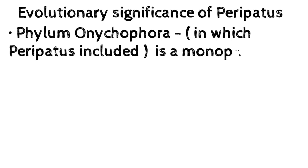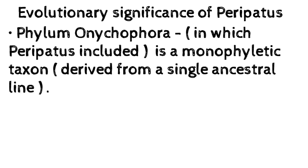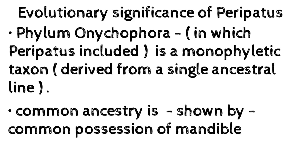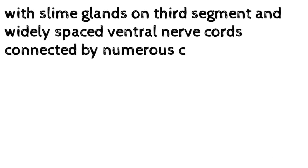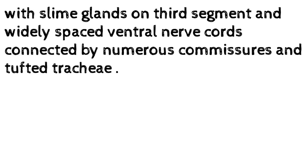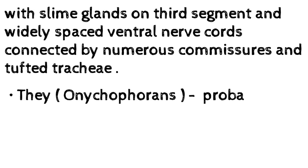Evolutionary significance of Peripatus. Phylum Onychophora, in which Peripatus is included, is a monophyletic taxon, derived from a single ancestral line. Common ancestry is shown by common possession of mandibles on the second head segment, oral papillae with slime glands on the third segment, and widely spaced ventral nerve cords connected by numerous commissures and tufted tracheae.